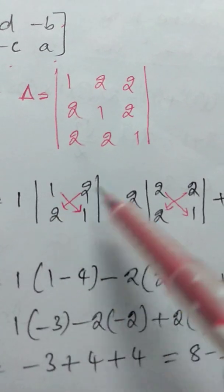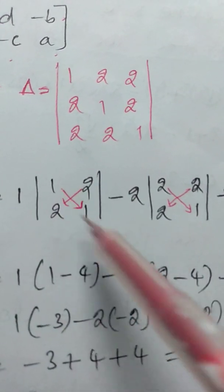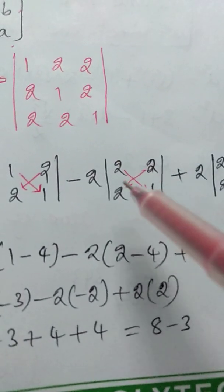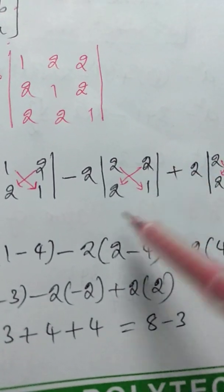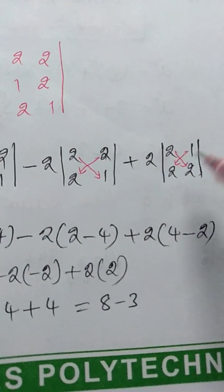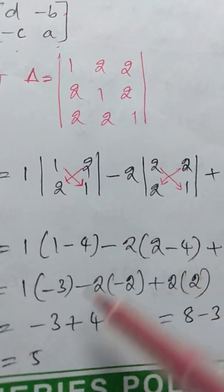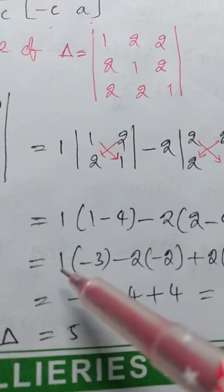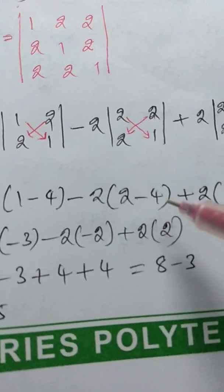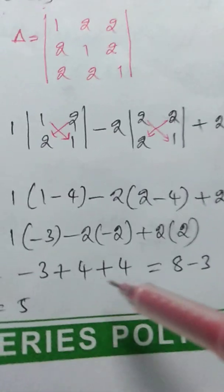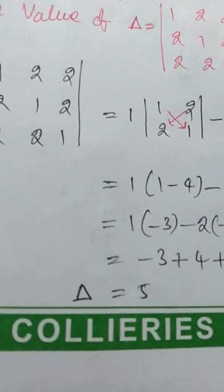For a 2x2 determinant [a, b; c, d], the value is ad minus bc. So: 1 into (1×1 minus 2×2) = 1 into (1 minus 4) = 1 into minus 3 = minus 3. Minus 2 into (2×1 minus 2×2) = minus 2 into (2 minus 4) = minus 2 into minus 2 = plus 4. Plus 2 into (2×2 minus 1×2) = 2 into (4 minus 2) = 2 into 2 = plus 4. Therefore, minus 3 plus 4 plus 4 = 5. The determinant value is 5.